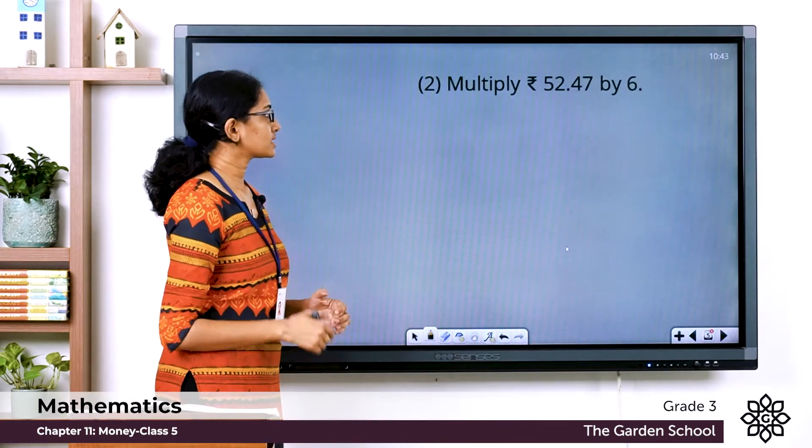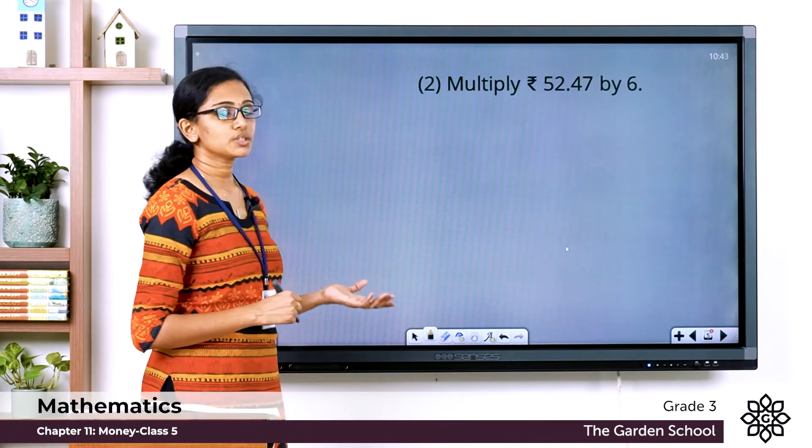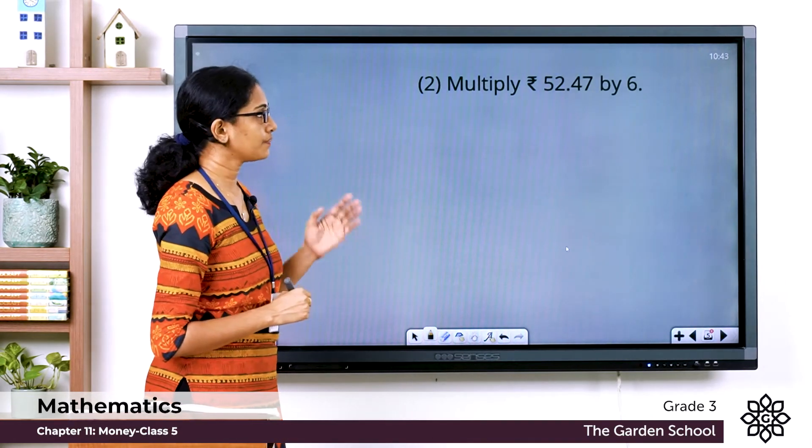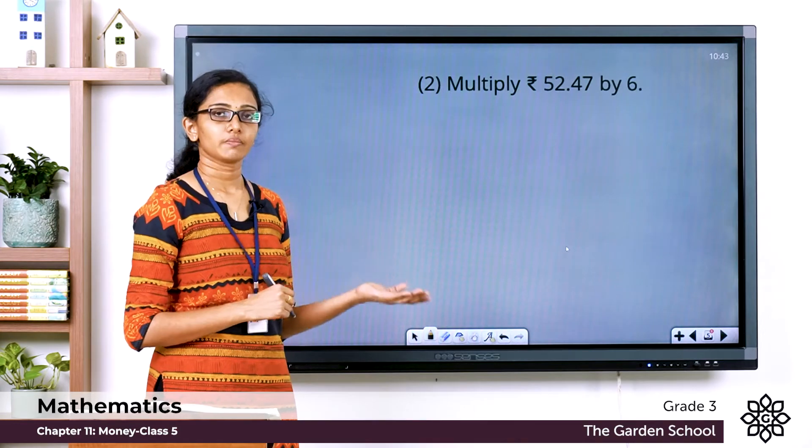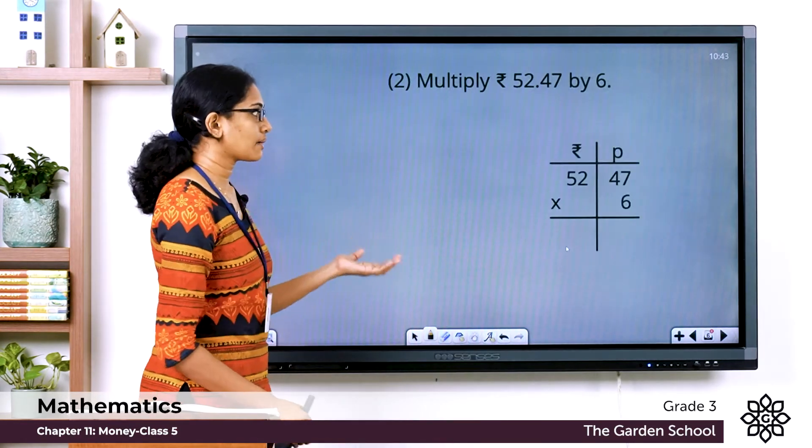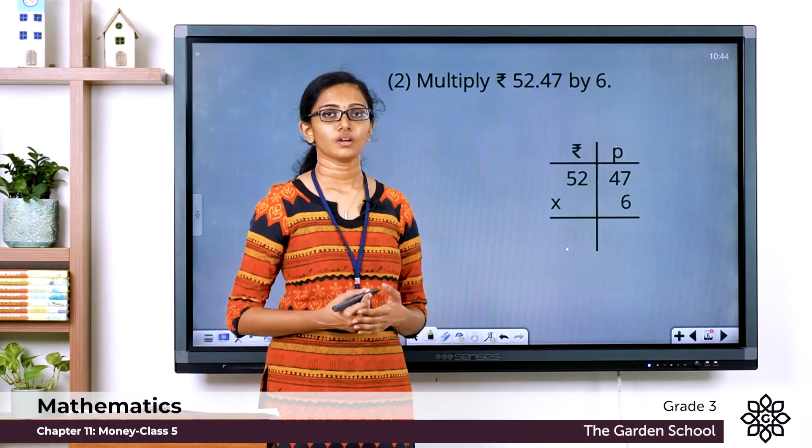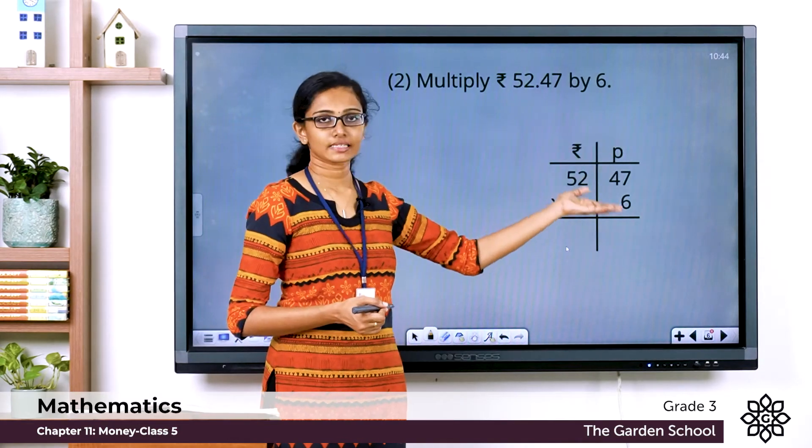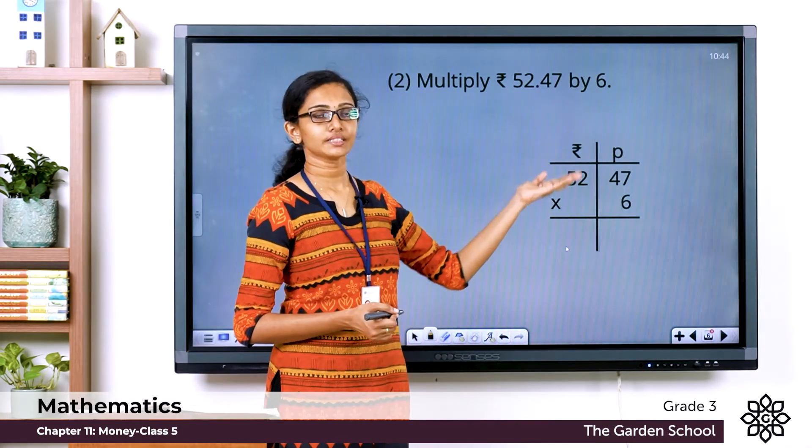Now we will do one more question. Multiply 52 rupee 47 paisae by 6. Like before let's first write the given amount in proper columns. First we will multiply the paisae then we will multiply the rupee.